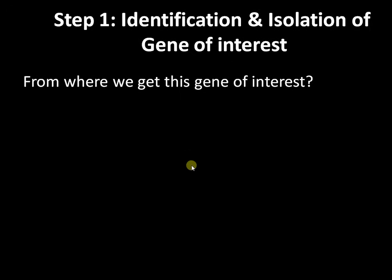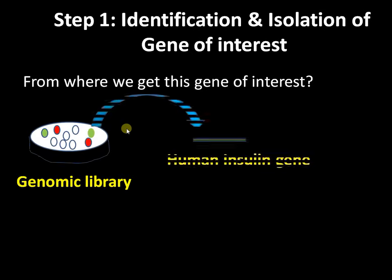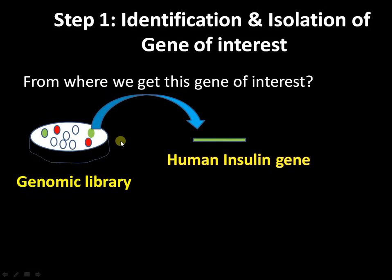To understand all these concepts, let us take an example. Here we are going to introduce the human insulin gene into bacteria. Step 1: from a genomic library, we have taken the human insulin gene. As mentioned, a genomic library is a source from where we get our gene of interest.